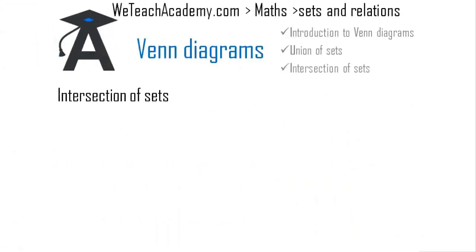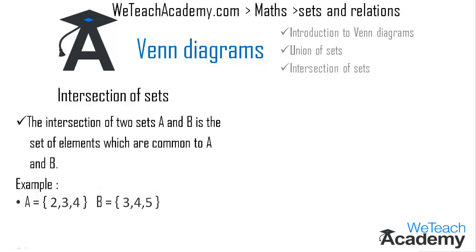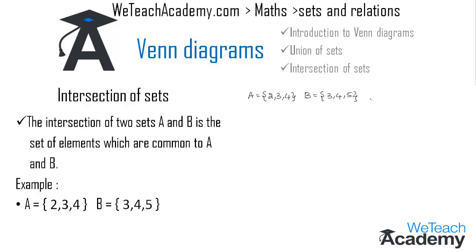Now let us discuss about intersection of sets. The intersection of two sets A and B is the set of elements which are common to both A and B. Here the elements of A are 2, 3, 4 and the elements of B are 3, 4, 5. The intersection symbol is used to write this operation. Marking the common elements, we find 3 and 4 are common, so A intersection B equals {3, 4}.